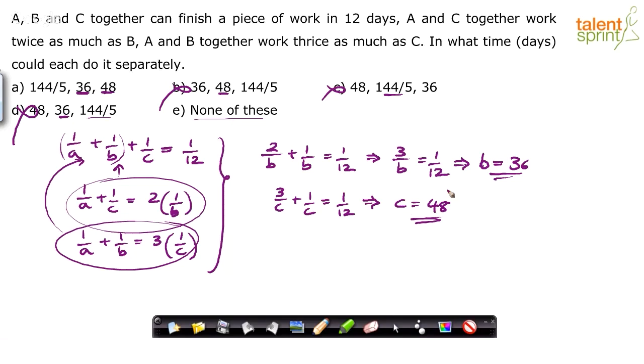Now that you have got B and C, substitute in the first equation to find out what is A. 1/A + 1/B can be taken as 1/36, plus 1/C can be taken as 1/48, equals 1/12.